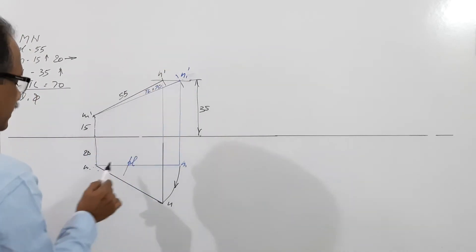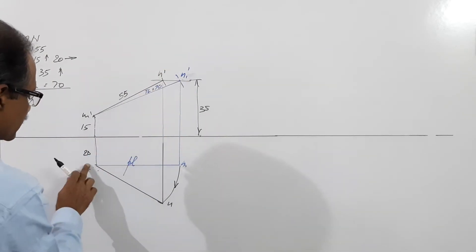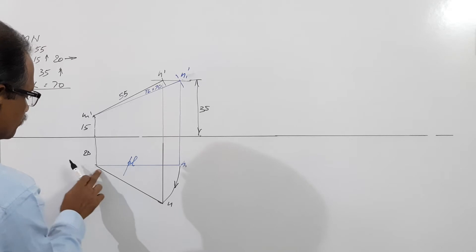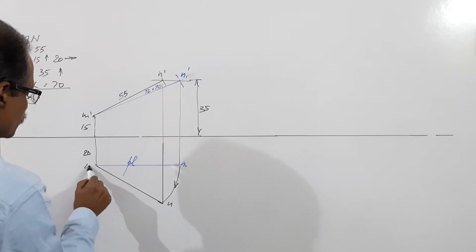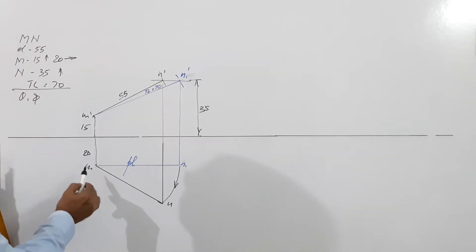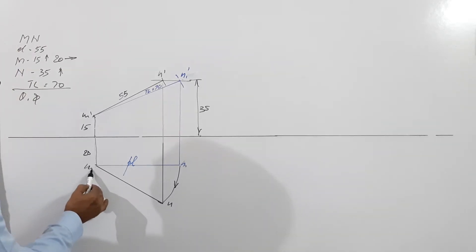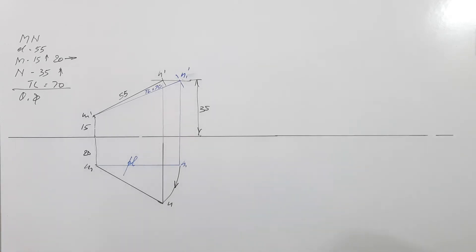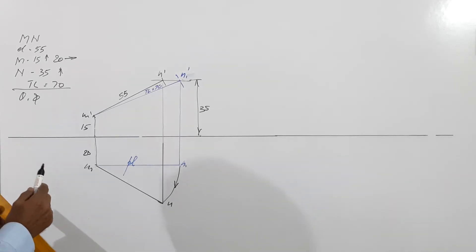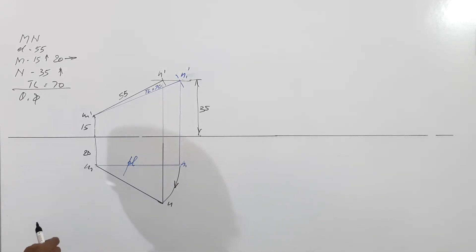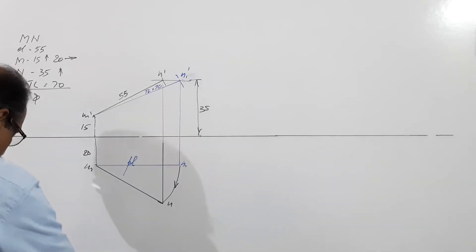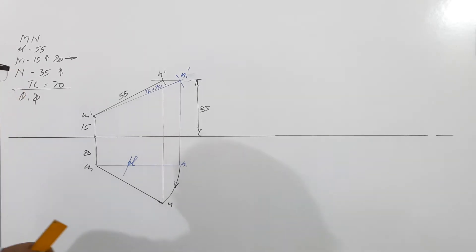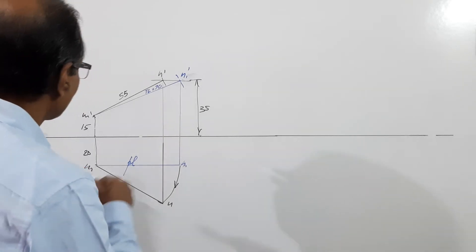M dash N dash is the elevation. M N is the plan. So you have drawn the projection. When you are asked to draw the projections, you have drawn the projection. Now what you are asked is to find out theta and phi.